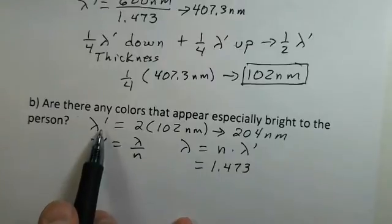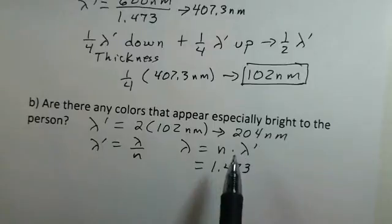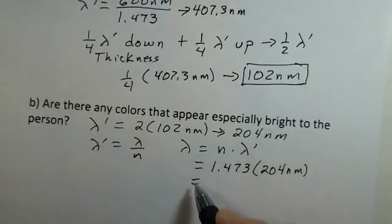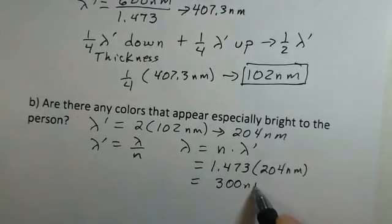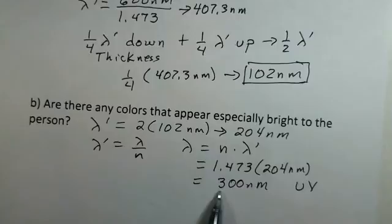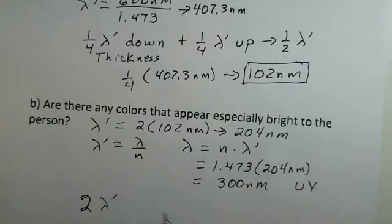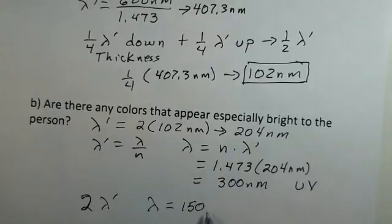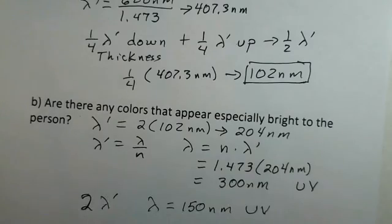For constructive interference we need one full wavelength of travel in the glycerin. Double the thickness is 204 nanometers, and multiplying by the index of refraction gives 300 nanometers in air. That is not in the visible spectrum — that's in the ultraviolet range. If we try a total path of two wavelengths in the glycerin, that gives 150 nanometers in air — also ultraviolet. So no, there is no visible color that will be truly bright with constructive interference.